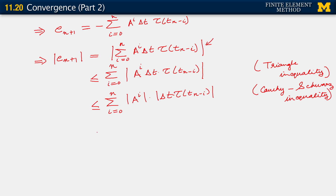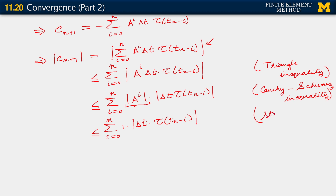We also have stability. If our method is stable, we are able to replace the sum: the sum for i from 0 to n of 1 times |delta t times tau(t_{n minus i})| bounds from above our previous right-hand side. Essentially I've replaced |A^i| with 1. Why? Because stability requires that |A| is less than or equal to 1, therefore |A^i| is also less than or equal to 1. So substituting with 1 gives a bound from above.